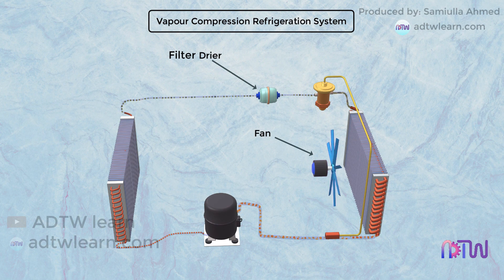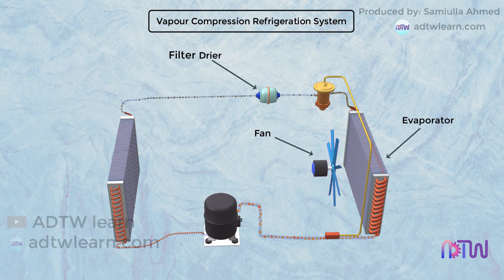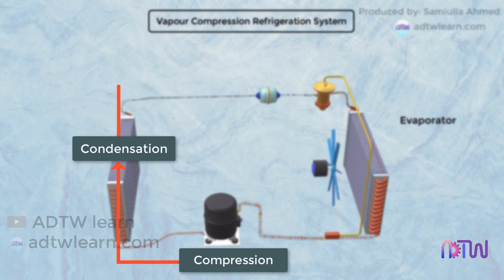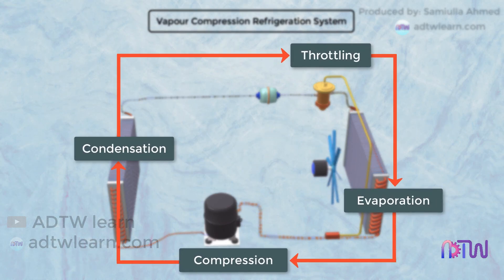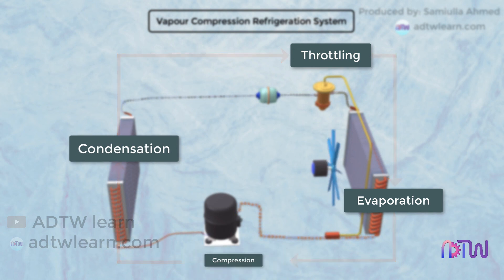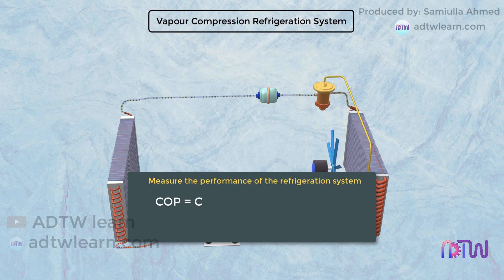Apart from these essential elements, there are additional components like a fan. A fan blows air on the evaporator coil; air passing over the evaporator coil loses heat to the coil. These four steps repeat to maintain the space at a lower temperature than the surrounding temperature. This is how a simple vapor compression refrigeration system works.